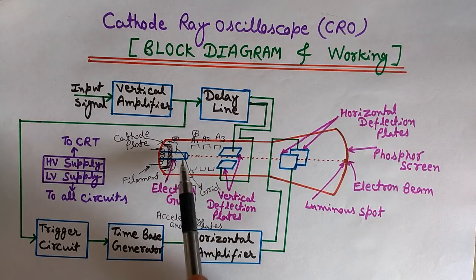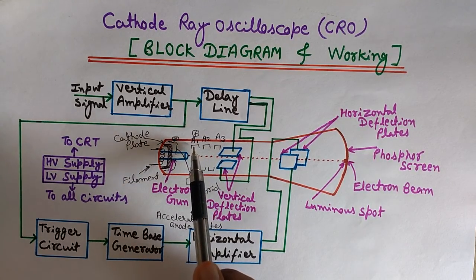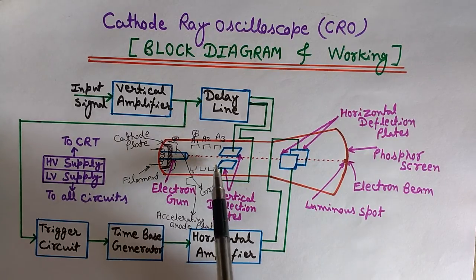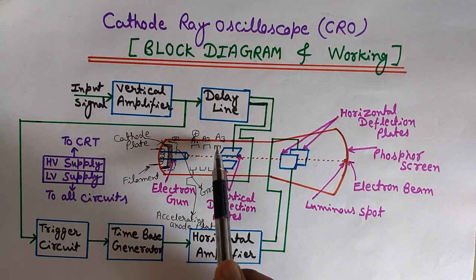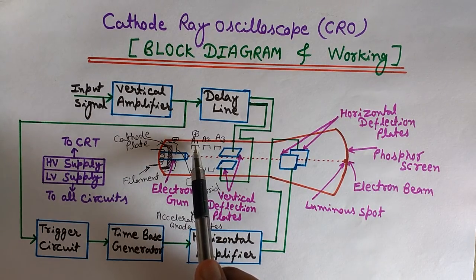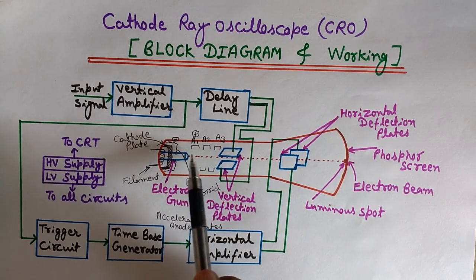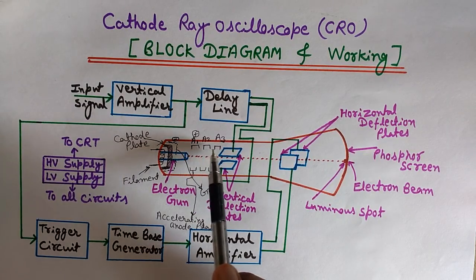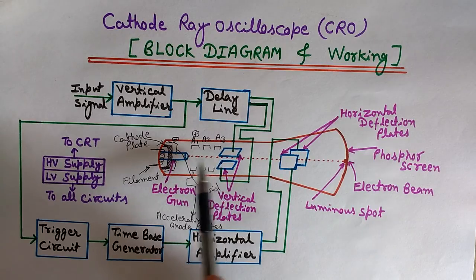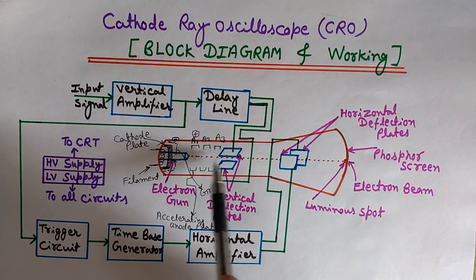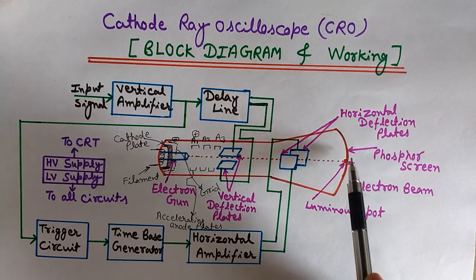There is a small hole in this grid that gives passage for electrons to emit. Now here we have three accelerating anode plates — anode means positive voltage is applied. The positive voltages are applied in increasing order: the voltage on A1 is less than A2, and A2's voltage is less than A3, which has the highest positive voltage. These accelerate the electron beam emitted from the gun, since positive charge attracts the negative electron beam.